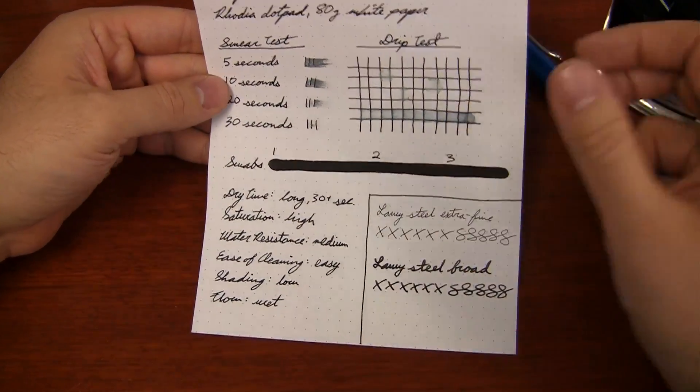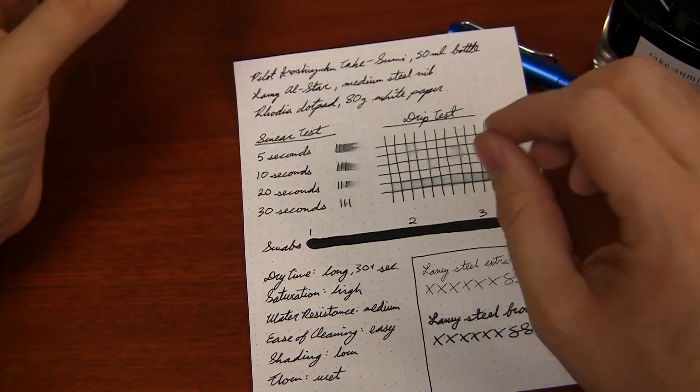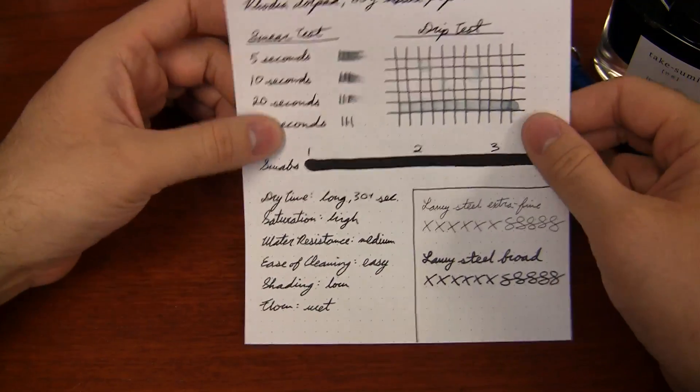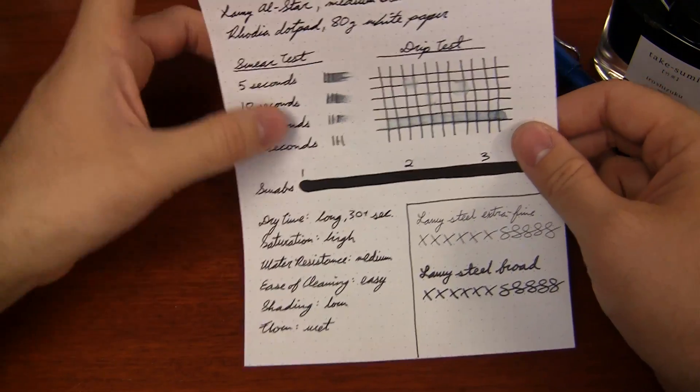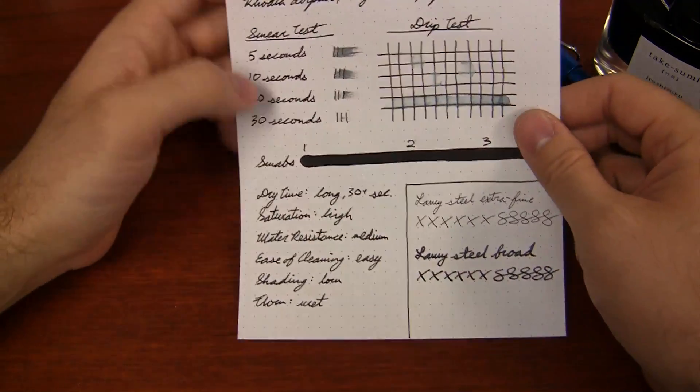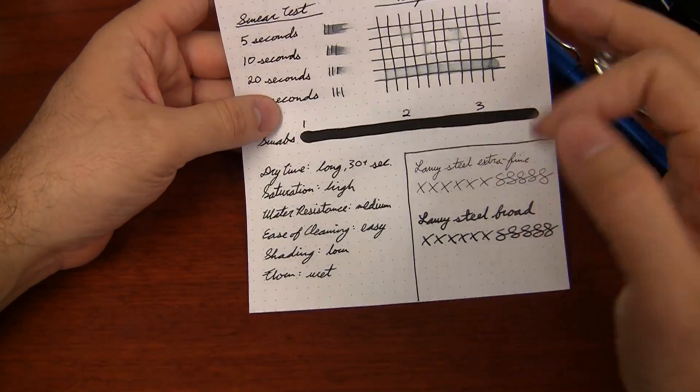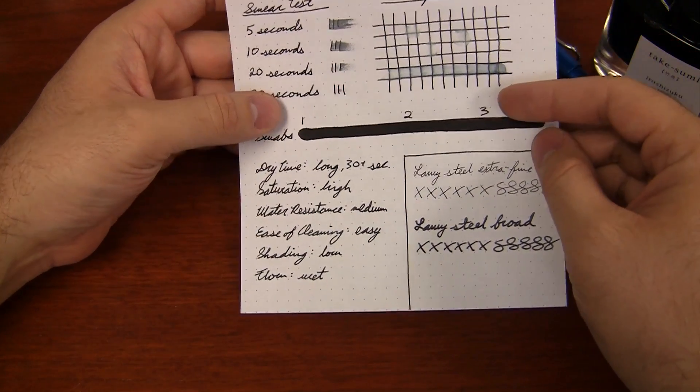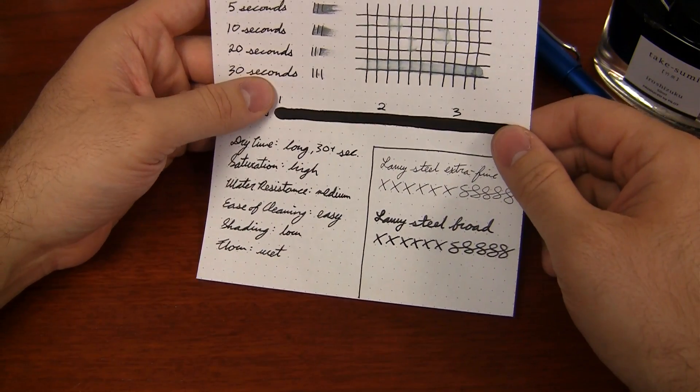But personally, I'm used to using papers like Rhodia, and I'm used to having a really long dry time anyway. I would say if you're left-handed or something, you may have some complications. If you are an overwriter and you smear your hand across the ink or something like that, then you may not be in love with the length of time that this takes to dry. But for most other people, it's not going to be a problem.